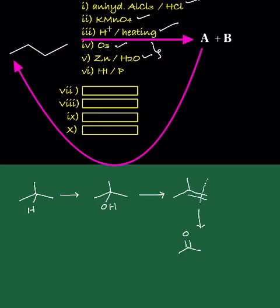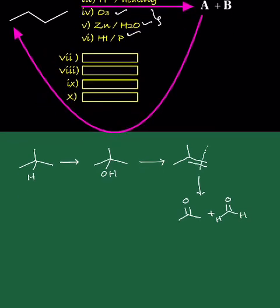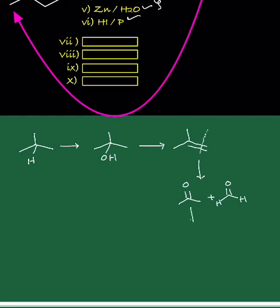One is a three-carbon compound, another is a one-carbon compound. So one product is the ketone acetone, another is formaldehyde. HI/phosphorus reduces both of them into corresponding alkanes. So one is propane and another is methane.